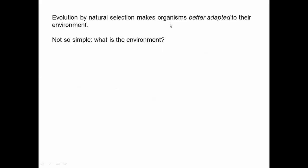Evolution by natural selection makes organisms better adapted to their environment. But it's actually not quite so simple, because we want to think about what actually is that environment that organisms are becoming adapted to. Lots of different things might exert selective pressure on organisms — things that might make organisms better or worse at surviving and reproducing. Like plants and their ability to capture sunlight, or animals and their ability to hide from predators. The environment is the rest of nature that organisms are dealing with, and that's not simple because the environment is a very complicated thing.